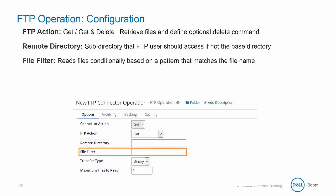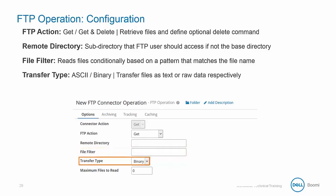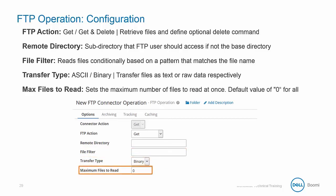Next is the file filter, which locates files based on pattern matching using the file name. You can use wildcard characters such as the star or question mark to create file name patterns. You also have the transfer type option, which transfers files as text or raw data. Lastly, you have max files to read, which sets the maximum number of files to read at once — the default value is zero, which equals all.